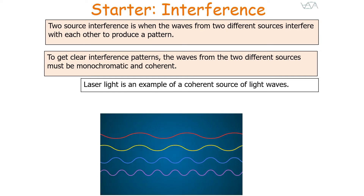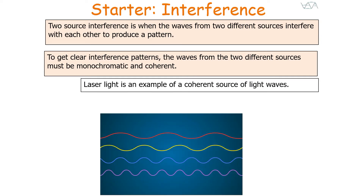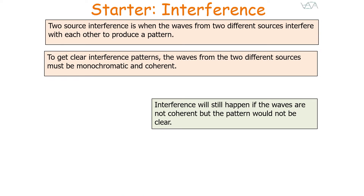A laser is an example of a coherent source of light waves. Interference will still happen if the waves are not coherent, but the pattern formed would not be very clear.